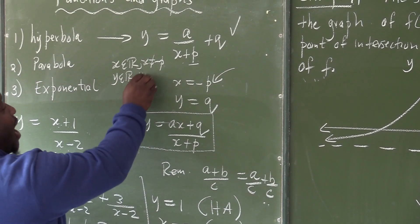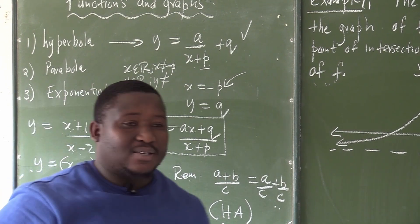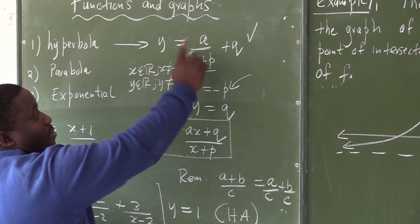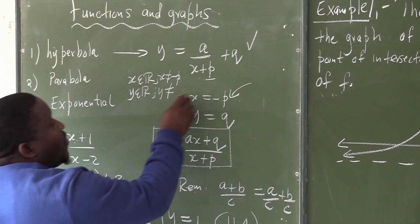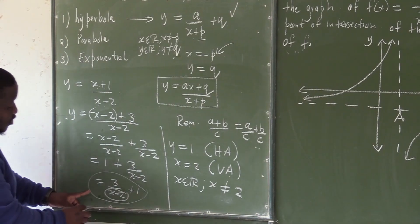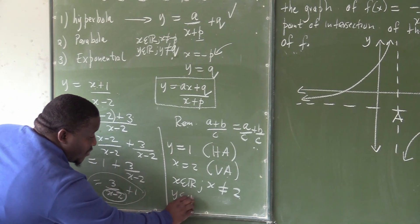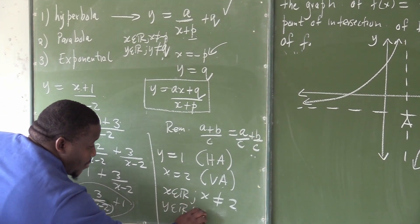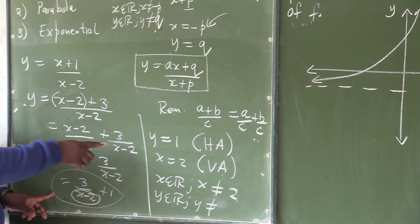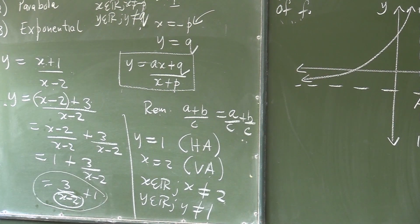Y may not be equal to the horizontal asymptote. What is my horizontal asymptote in this standard form? In this graph, it's Q. Therefore, Y cannot be equal to Q. In this case, my range is going to say, refer to this one, Y is an element of real numbers, but Y cannot be equal to the horizontal asymptote. What is my horizontal asymptote? It's 1, which means Y cannot equal 1.